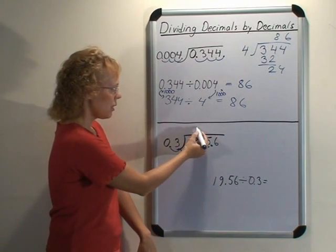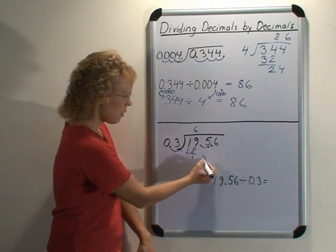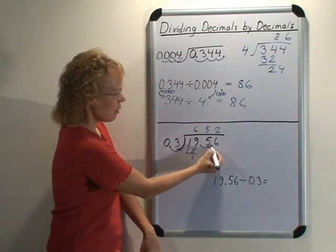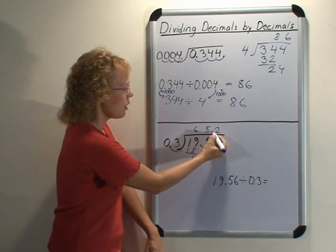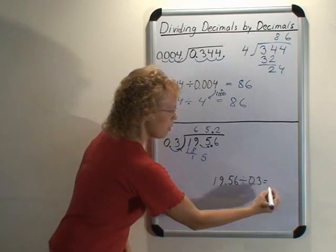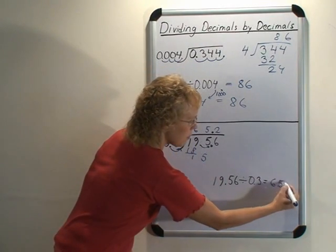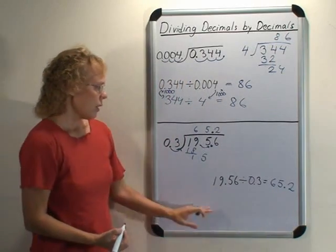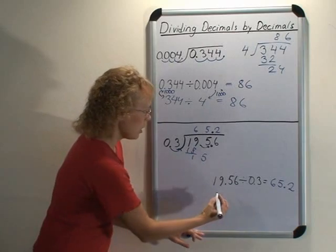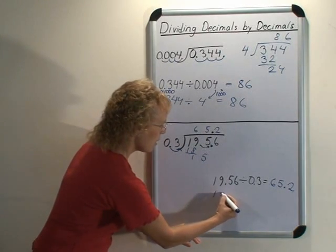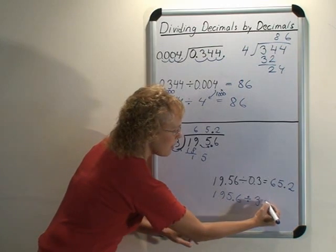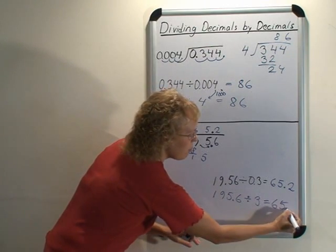And then we divide by 3. 3 goes into 19 six times, into 15 it goes 5 times. And the decimal point is here, so it goes to the quotient here too. So our answer is 65.2. And I will write here the problem that it was changed into. It was changed into the problem 195.6 divided by 3, and the answer was 65.2.